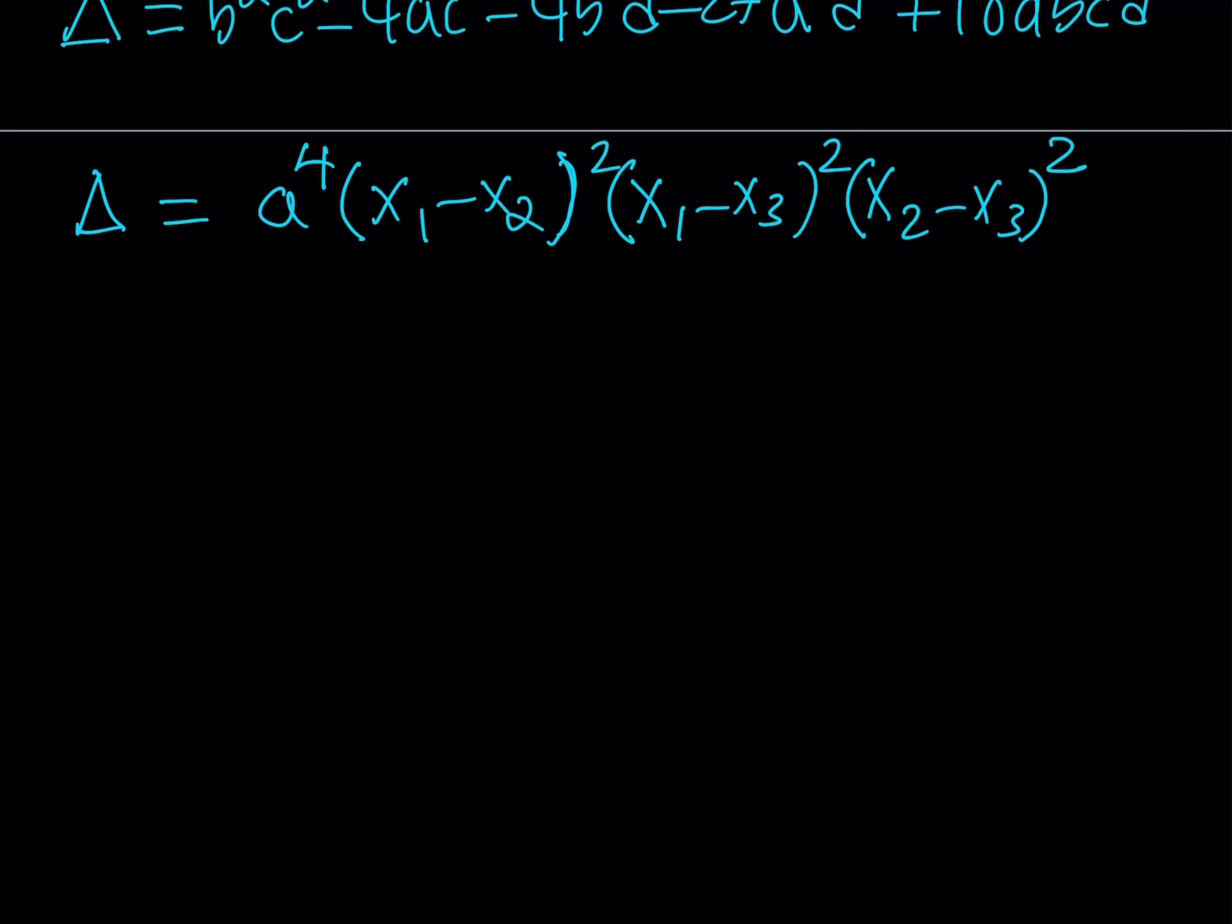So that's the discriminant and the second formula is actually really really cool because it tells you what happens when we have a double root. So in other words, if x₁ is equal to x₂, what happens? You get a zero and the discriminant becomes zero. So x₁ = x₂ in a cubic equation basically implies that the discriminant is zero. Awesome.